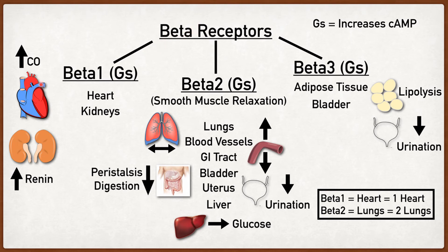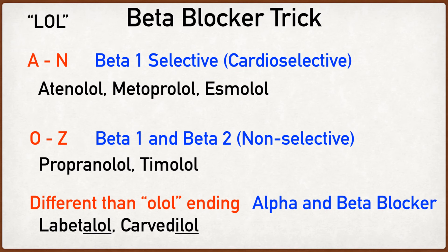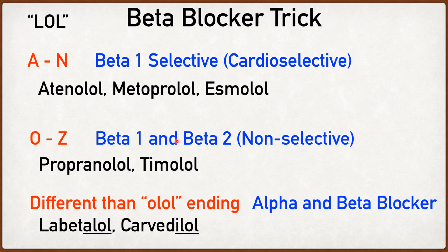Metoprolol is said to be selective for the beta 1 receptor and is classified as a beta 1-selective blocker. This means it has a preference to block the beta 1 receptor as compared to the beta 2 or beta 3 receptors. However, when we increase the level of metoprolol in the body, it also has the tendency to interact with or block the beta 2 receptor, meaning it can interact with unintended receptors — those having lower affinity — at higher concentrations.